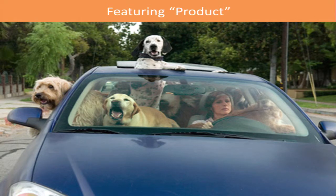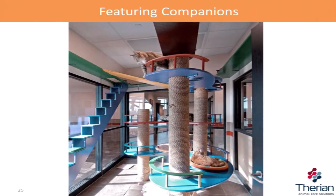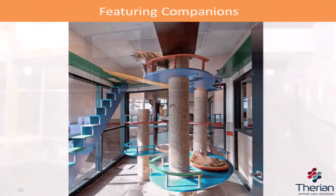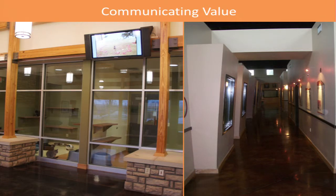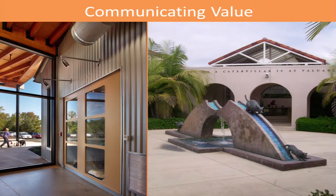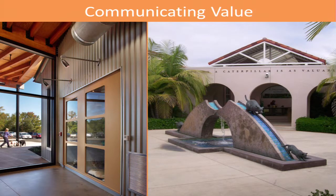Featuring companions: try to provide an environment that looks really nice so adoptees can see and understand what that cat or dog will look like in their environment. Communicating value: these spaces can look expensive but don't have to be — polished concrete in certain areas can be very effective. Just don't go overboard. Some timber features can make it look more homely. Communicating value — one example on the right is San Diego SPCA; I just love the dog chasing the cat graphic, which is really quite humorous.